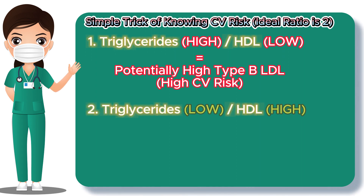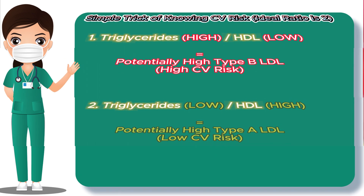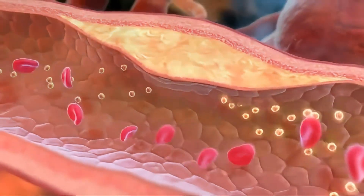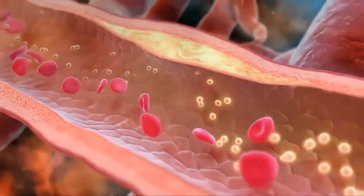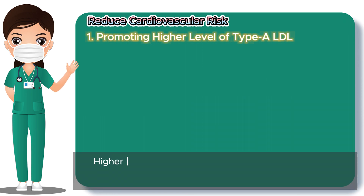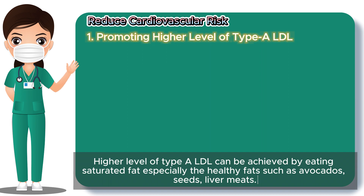But if your triglycerides are low and your HDL is high, chances are you have more of the potentially healthy type A LDL, or large buoyant cholesterol particles — which means so far so good. In order to avoid cardiovascular heart disease, we should aim for the following. Number 1: Promoting higher levels of type A LDL, which can be achieved by eating saturated fat, especially healthy fats such as avocados, seeds, and liver meats.